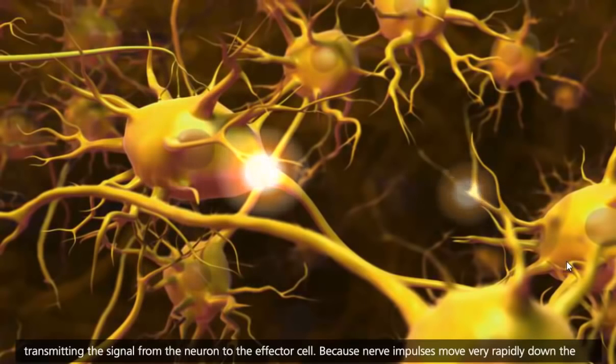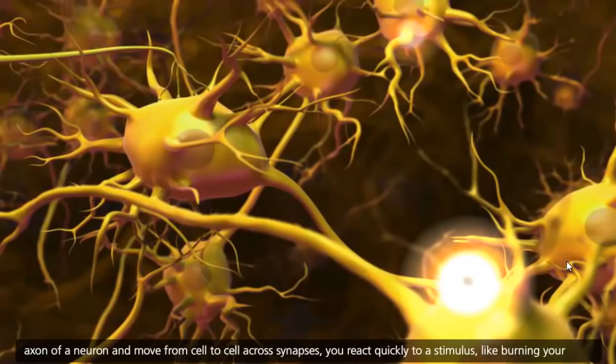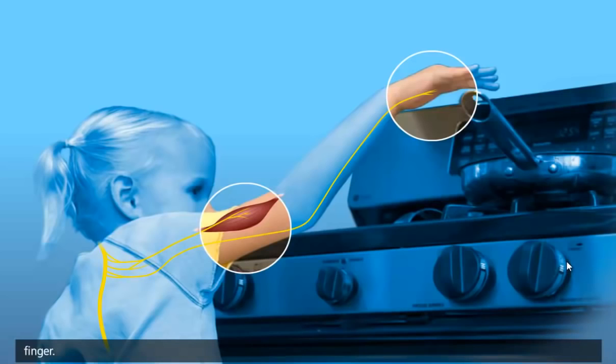Because nerve impulses move very rapidly down the axon of a neuron and move from cell to cell across synapses, you react quickly to a stimulus, like burning your finger.